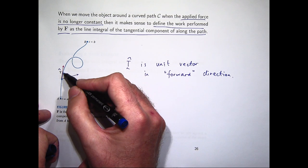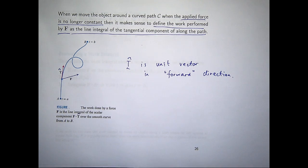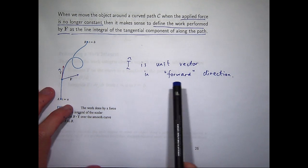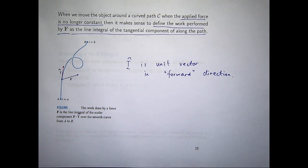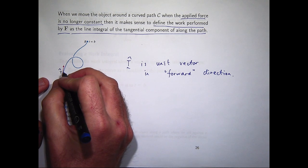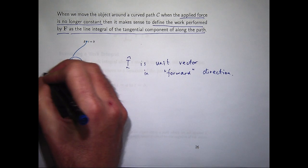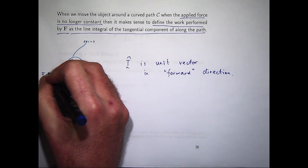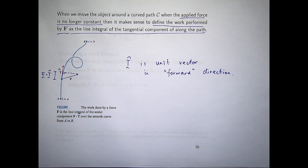So in this diagram we're going from this point to this point. If we're going from this point the other way, the T hat vector would be spun around 180 degrees. So essentially what we're doing is we are looking at the so-called tangential component of the force, and we're integrating that dot product over the curve.